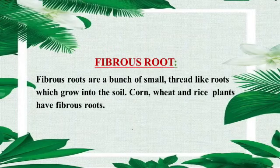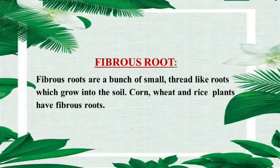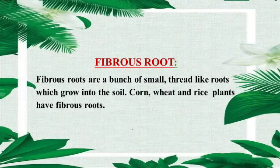Fibrous roots are a bunch of small thread-like roots which grow into the soil. Corn, wheat and rice plants have fibrous roots. Fibrous roots ایک گچھا ہیں چھوٹی دھاگے جیسی جڑوں کا جو مٹی میں جاتی ہیں۔ Corn، Rice، Wheat کے پودوں کی fibrous roots ہوتی ہیں۔